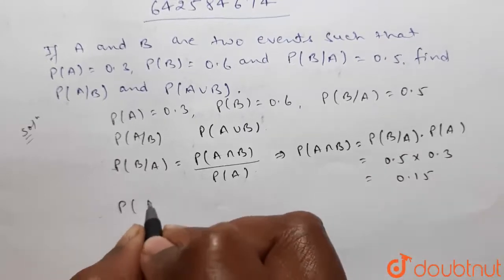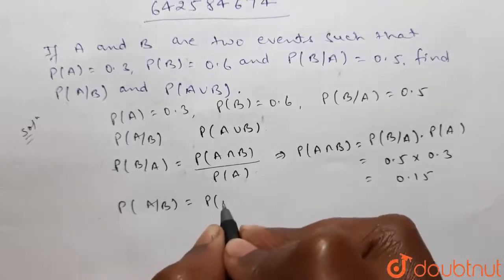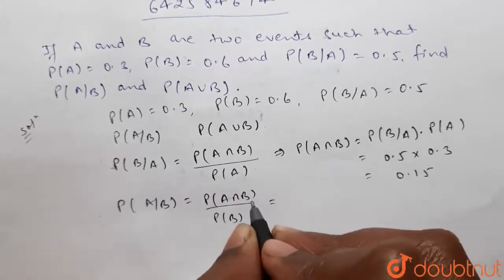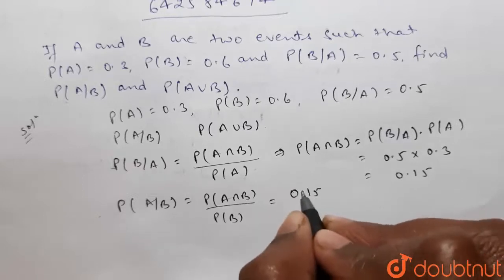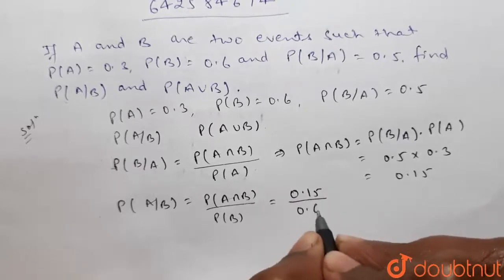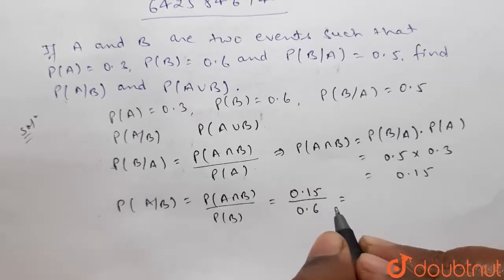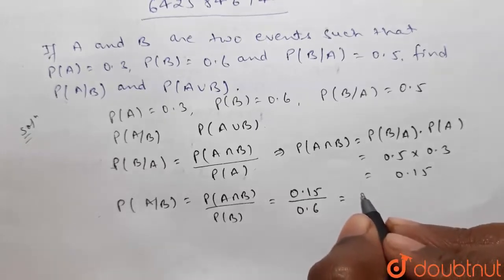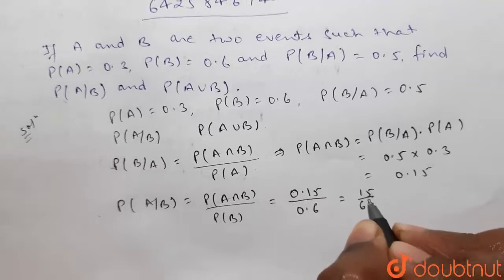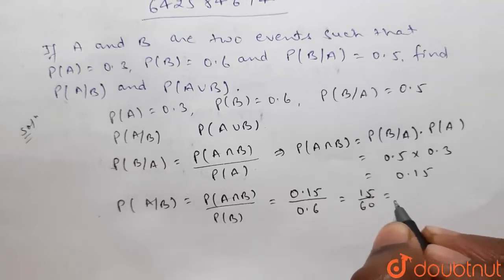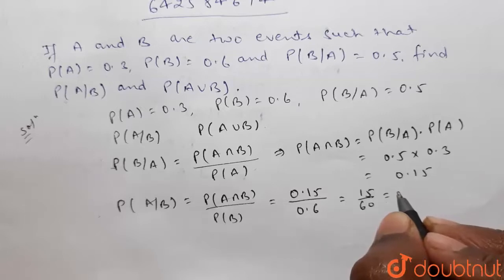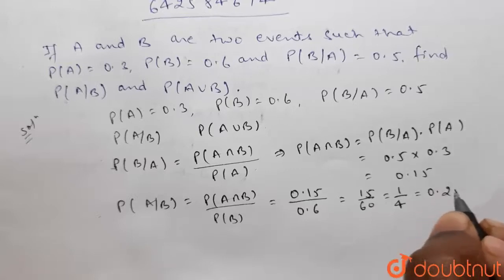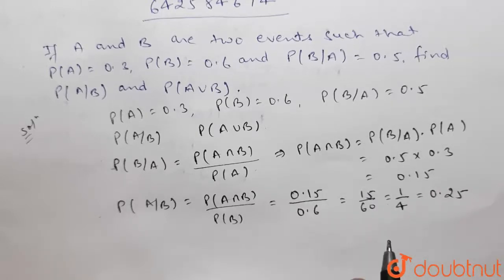Now, probability of A given B is equal to probability of A intersection B divided by probability of B. Probability of A intersection B is 0.15 divided by probability of B which is 0.6, which is equal to 1/4, so this will be equal to 0.25. So, probability of A given B is 0.25.